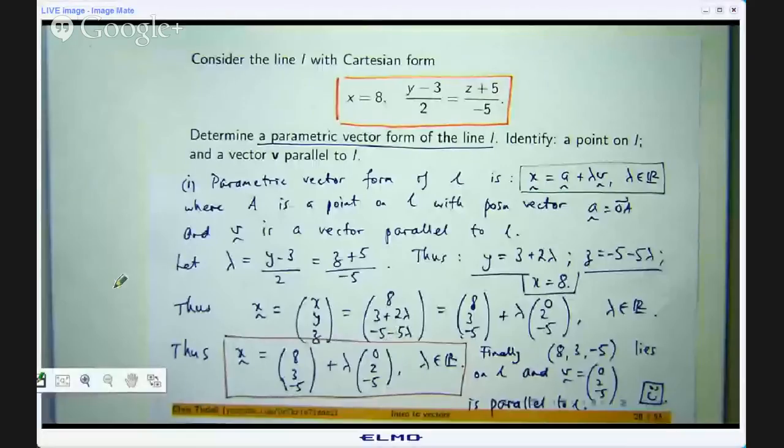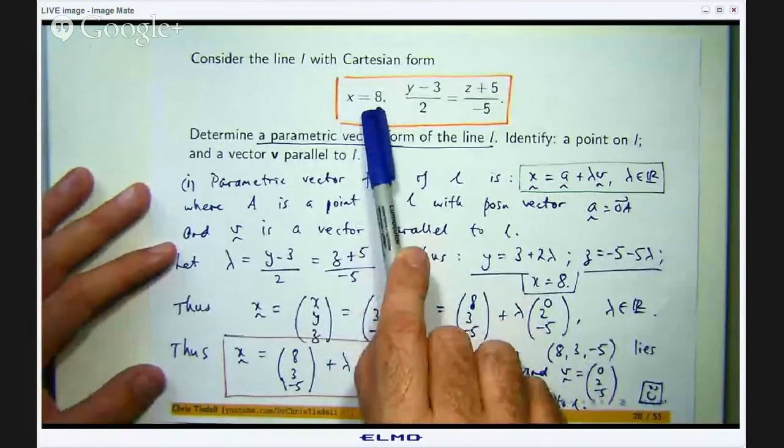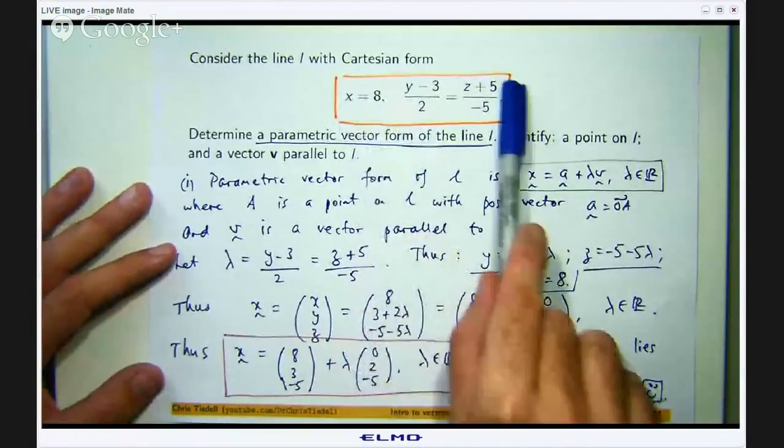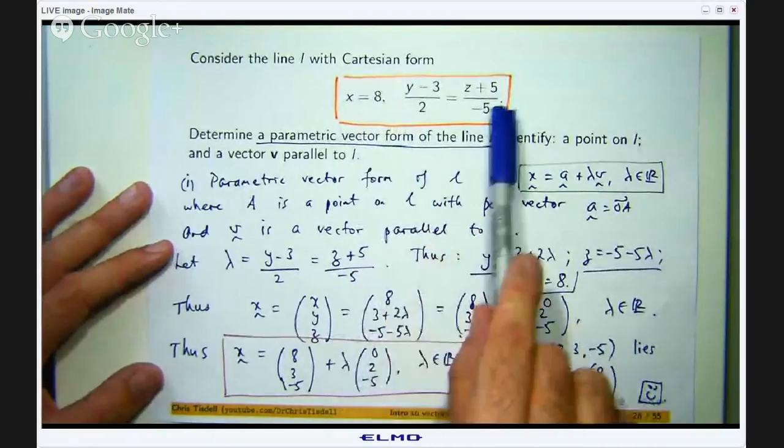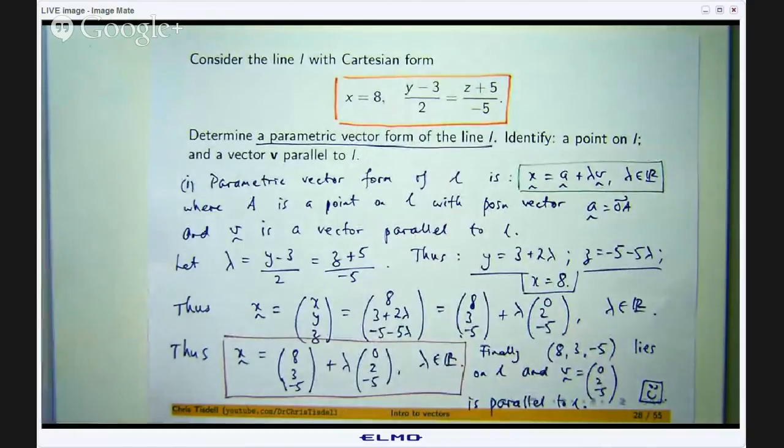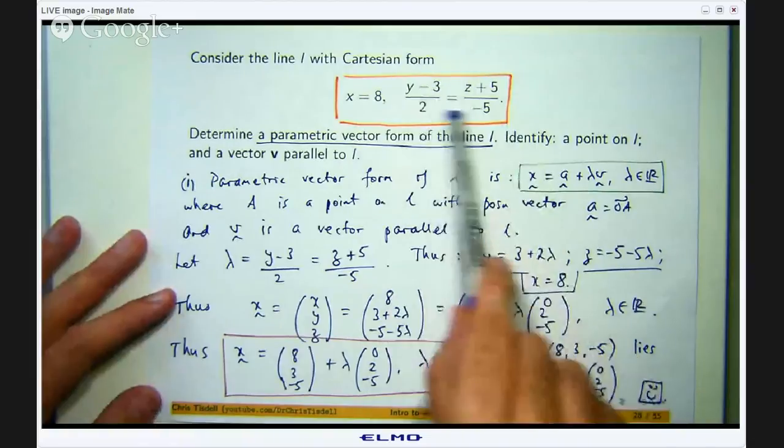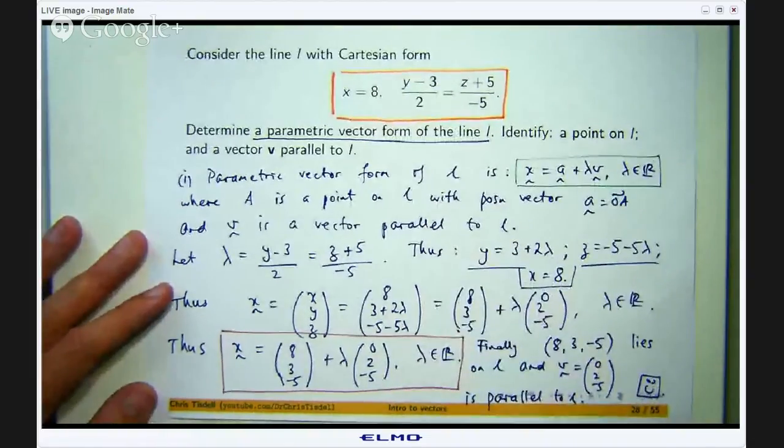Now let us just talk about the geometry of the problem just for a second. So let me just share my screen again with you and talk about this a little bit more. Now notice here x is always a constant. So what this means is the line L associated with this form stays in a special vertical plane. It is contained in the plane x equals 8. That is a vertical plane that is parallel to the yz axis and passes through the point 8, 0, 0. So this line can never leave the plane x equals 8.